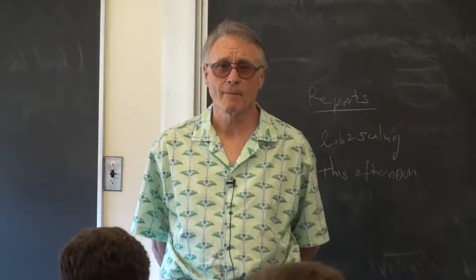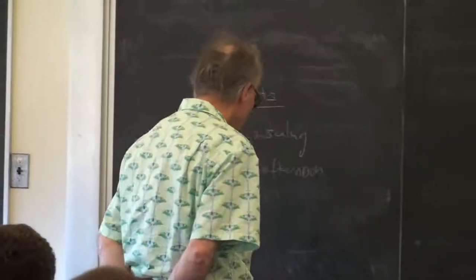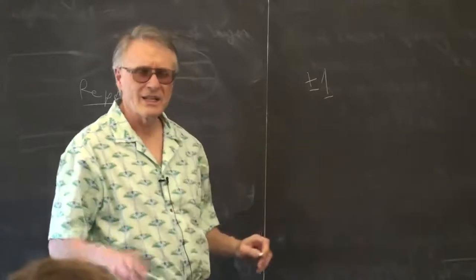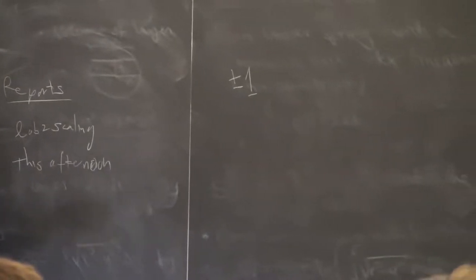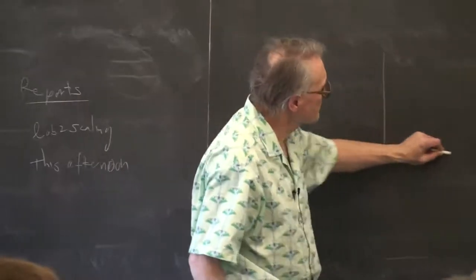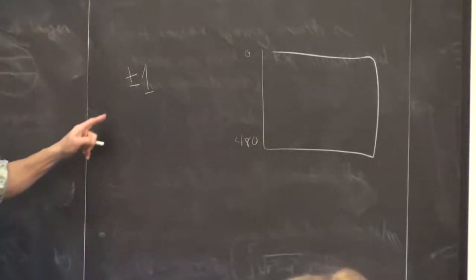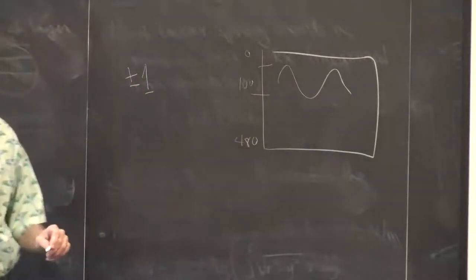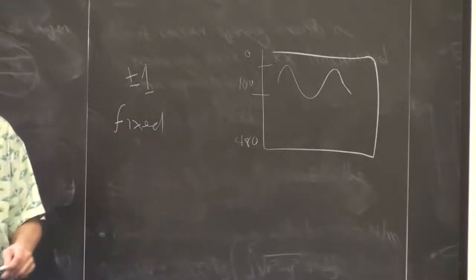I got an interesting question yesterday about Lab 2 that made me scratch my head. The output of your simulation is in the range of plus or minus one — it can overflow to about 1.99, but the goal is to keep it in that range. The VGA screen has about 480 vertical resolution, so if you're going to see a waveform on screen you need to scale this up to something like 100 units tall. The question is: given a fixed-point number between plus and minus one, how are you going to scale it?